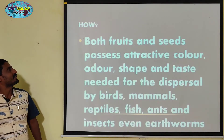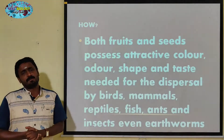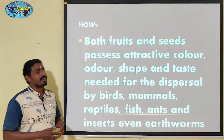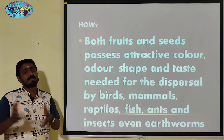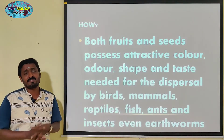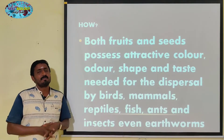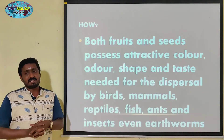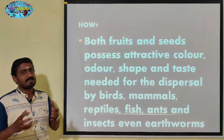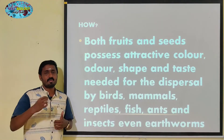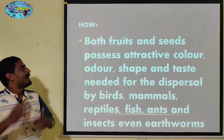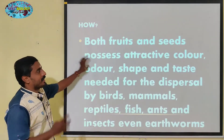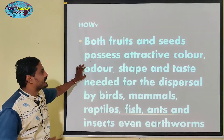How does seed dispersal work? Fruits and seeds have attractive color. In case wind dispersal is available, attractive color is available. In case birds are used as an agent for seed dispersal. In case insects are available — insects agents are available.